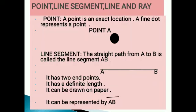Next definition, line segment. The straight path from A to B is called the line segment AB. The properties of line segments: it has two endpoints, it has a definite length, it can be drawn on paper, and it can be represented by AB with a line segment sign.